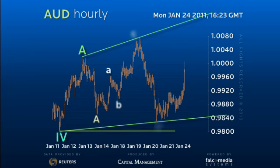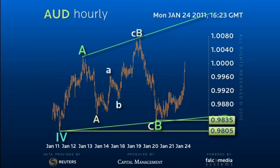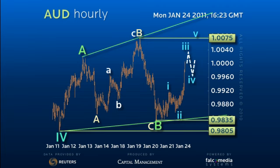Having held the 9805-9835 lows, it has rallied strongly to encourage a retest of the 10075 high. In fact, a C equals A target would be exactly 10050, and this is likely where a short-term trend sequence will end. So, more 98 to 10075 consolidation.